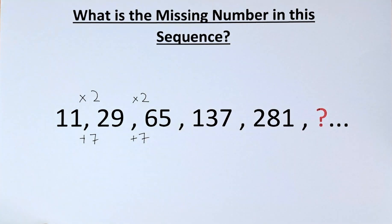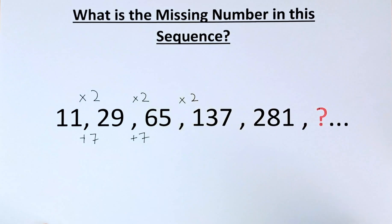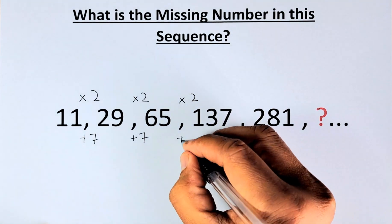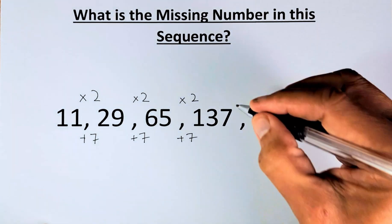And we go on from 65 to 137. You multiply by 2. 65 by 2 is going to be 130. And you add 7, it becomes 137.